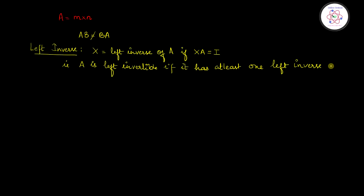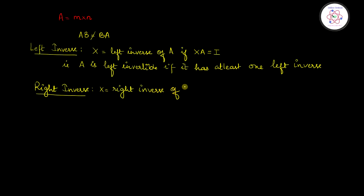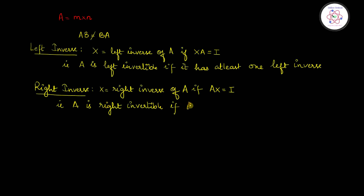In similar terms, let us see what is the right inverse. In this case, let me consider X to be the right inverse of a matrix A if A into X is equal to I. That is, A is right invertible if it has at least one right inverse.